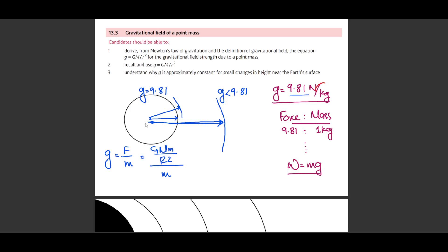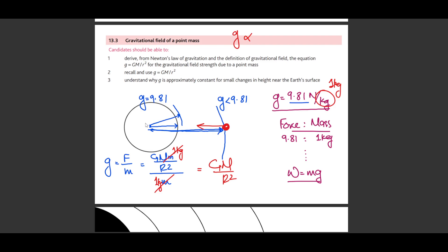So g = GM/r², meaning g is proportional to M/r². If the object is very massive, its gravitational field strength is higher. But as your distance r from the center increases, the gravitational field strength at that level reduces. The mass m of the test object cancels out, leaving us with just GM/r² — confirming that field strength depends only on the source mass and the distance.